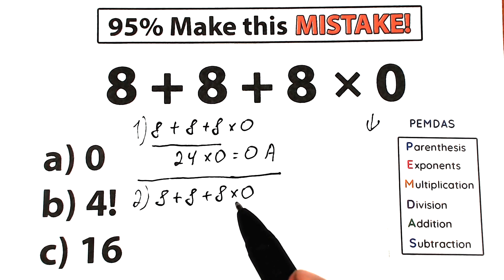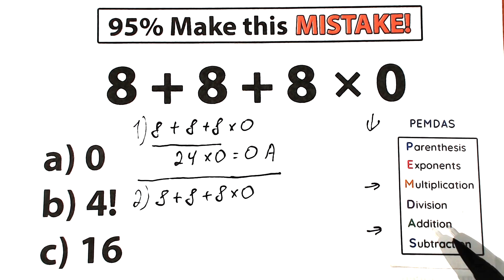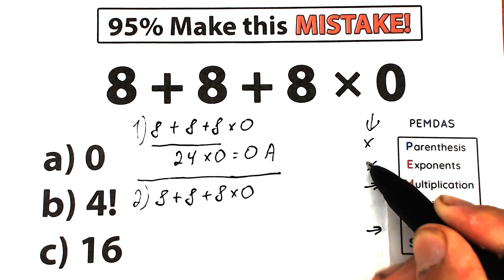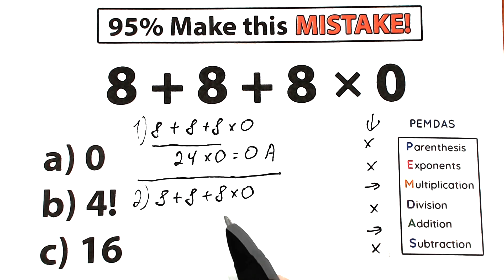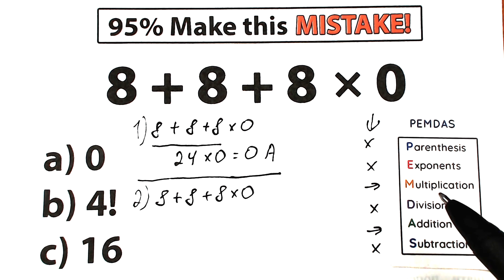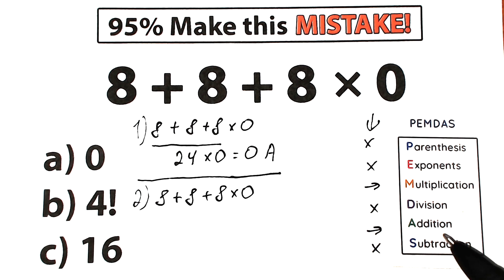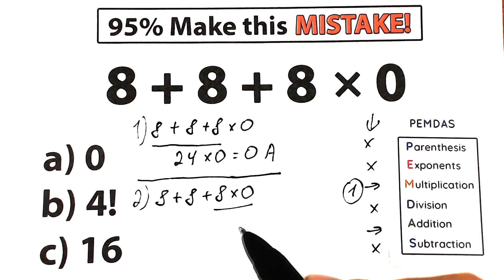Let's scan our challenge: 8 plus 8 plus 8 times 0. We have multiplication and we have addition. We don't have any parentheses, exponents, division, or subtraction — only multiplication and addition. Since PEMDAS works top to bottom and multiplication has higher priority than addition, our first step should be multiplication: 8 times 0.